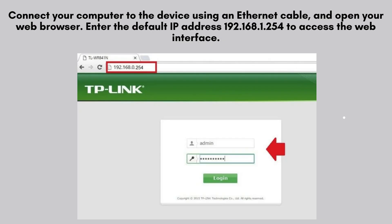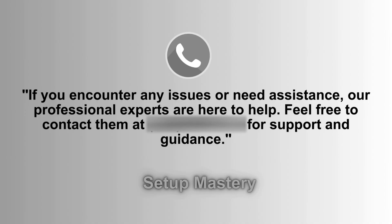After the reset, you'll need to reconfigure the TP-Link CPE 510. Connect your computer to the device using an Ethernet cable and open your web browser. Enter the default IP address 192.168.1.254 to access the web interface.